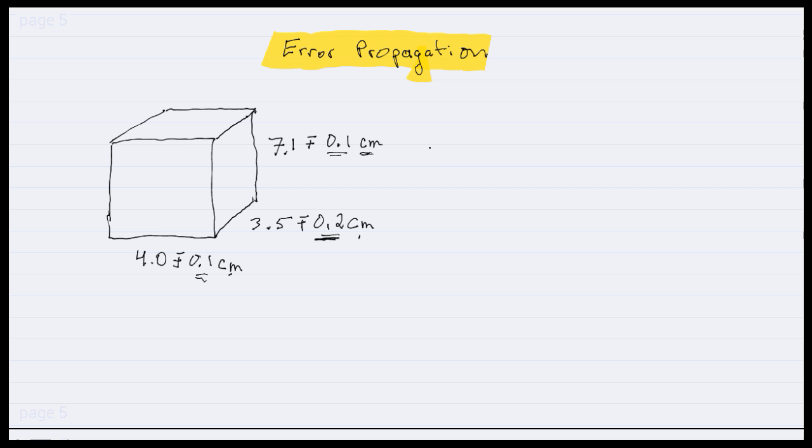And what we're going to do is calculate the volume. So the volume of this thing, it's just the base times the height times the width. So that's 4.0 centimeters times 3.5 centimeters times 7.1 centimeters. And you can plug all this in your calculator, and what you'll find is that the volume should be 99.4. And the units, we have centimeters times centimeters times centimeters, so we have centimeters cubed.